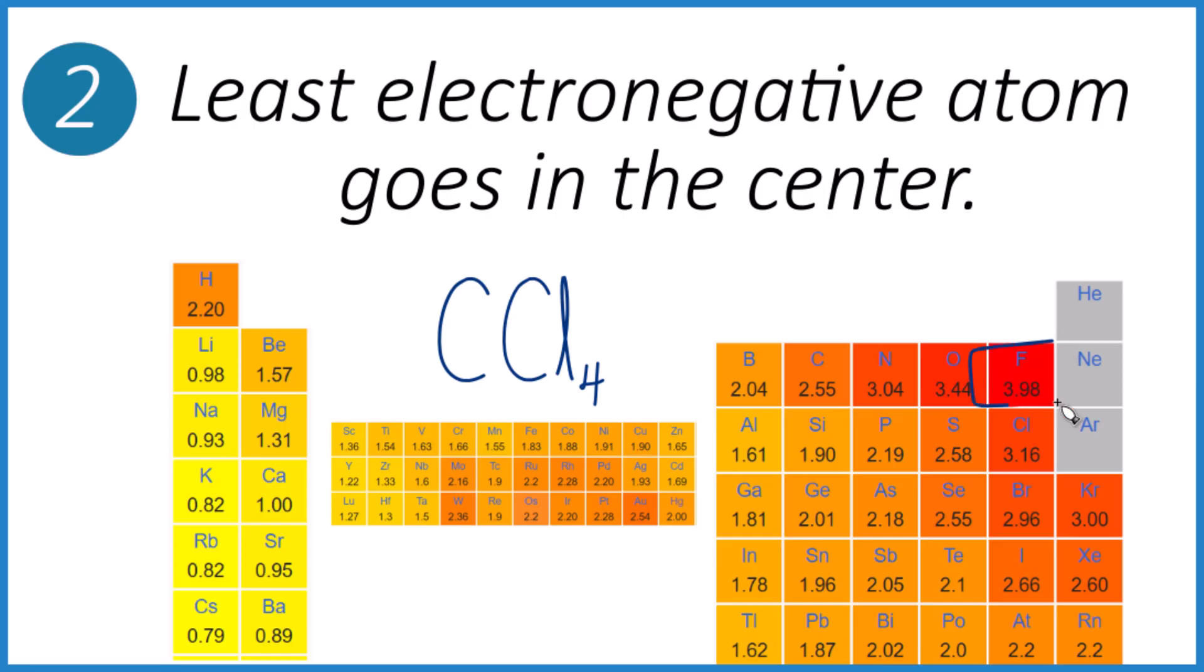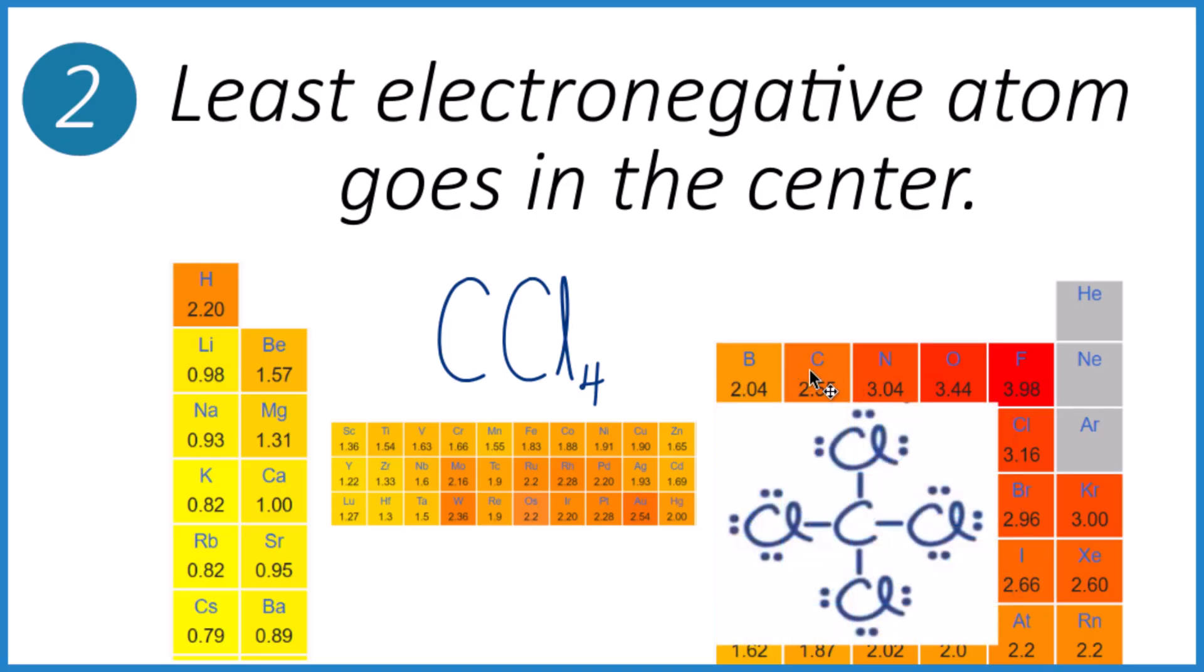Fluorine is the most electronegative. So when we move away, atoms become less electronegative. Chlorine, that's right next to fluorine, pretty electronegative, and then carbon over here. So our Lewis structure will look like this, where carbon's the furthest away from fluorine. So we put it at the center.